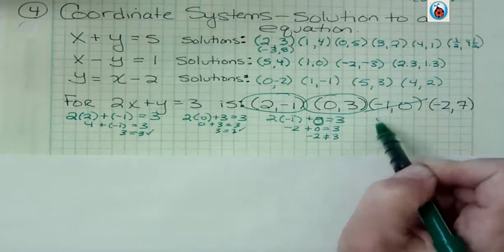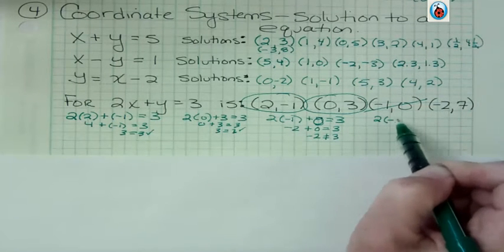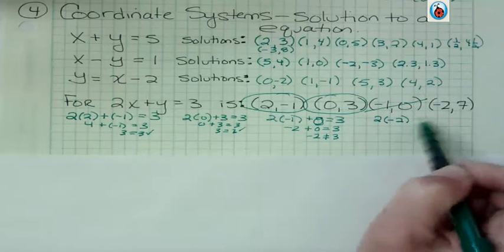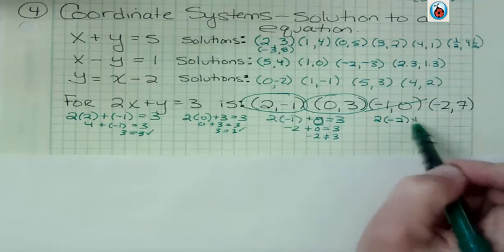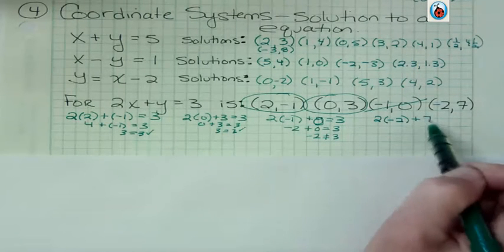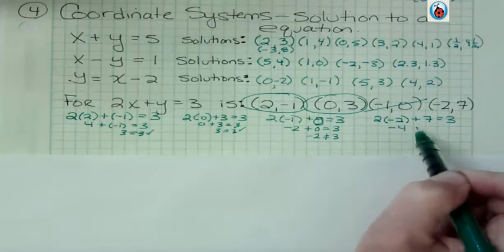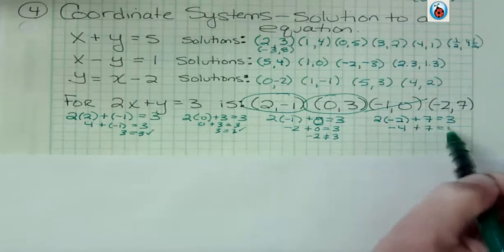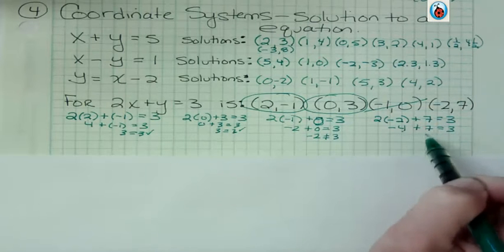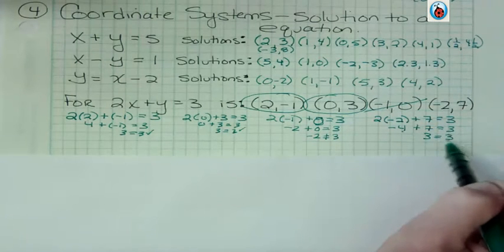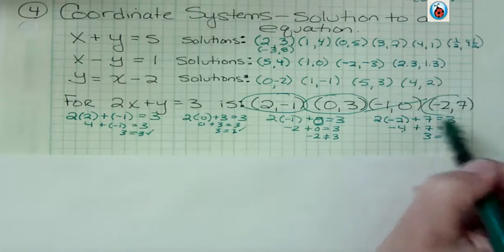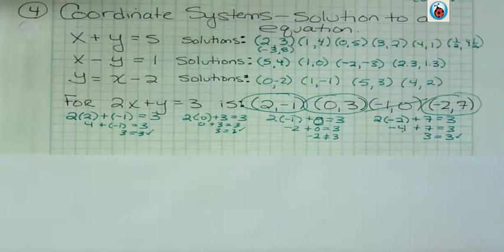All right, the last one. 2 times negative 2, that's what x is, plus y, which is 7, is supposed to be 3. 2 times negative 2 is negative 4, plus 7 equals 3. Negative 4 and 7 is 3. 3 equals 3. This is another solution. So when you're asked, is something a solution to an equation, you plug it in to determine that.